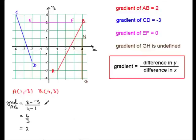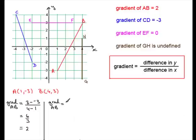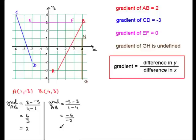I'm quite often asked: does it matter which way round you do the subtraction for the coordinates? Well, let's try and see. Suppose I look at the gradient of AB again, but this time starting with the y coordinate −3. The gradient would be −3 minus 3, all divided by 1 minus 4. So minus 3 minus another 3 is −6, all divided by 1 take away 4, which is −3. Minus 6 divided by −3 is clearly 2. So it doesn't matter which way round you do the subtraction, as long as you keep the order consistent.